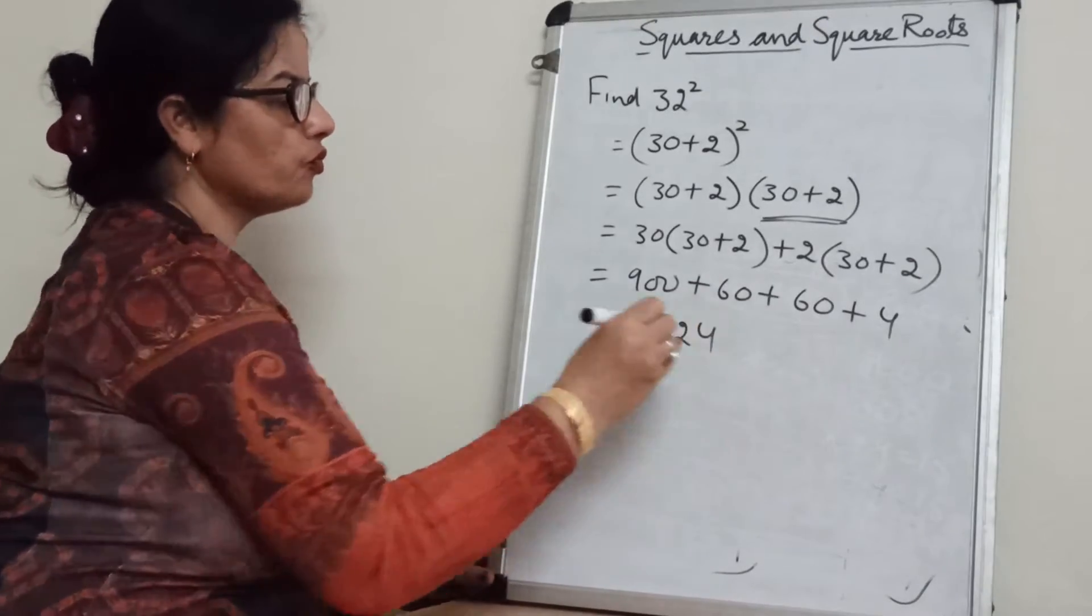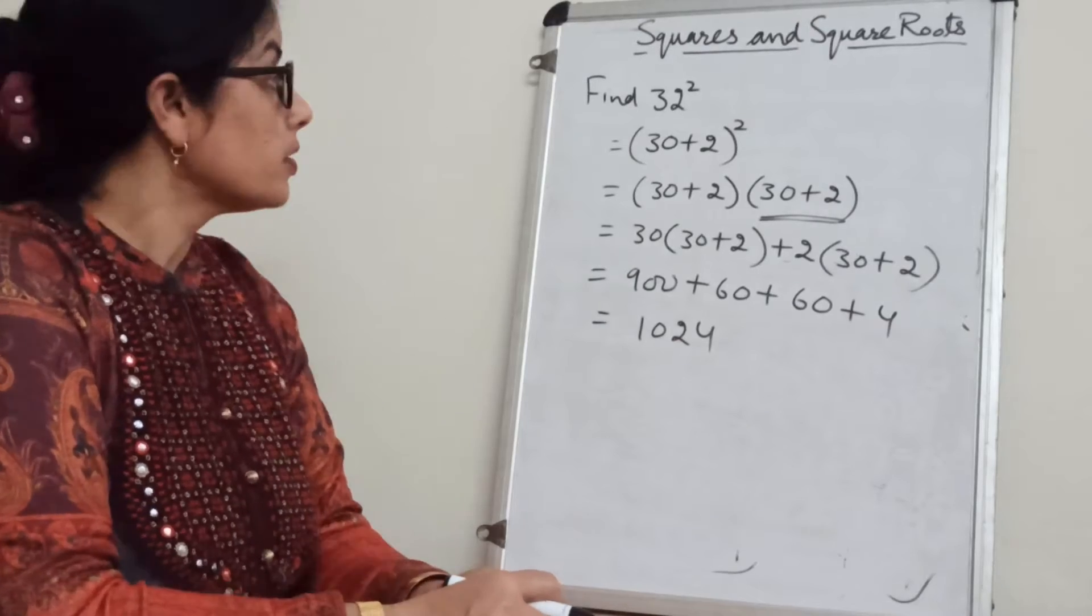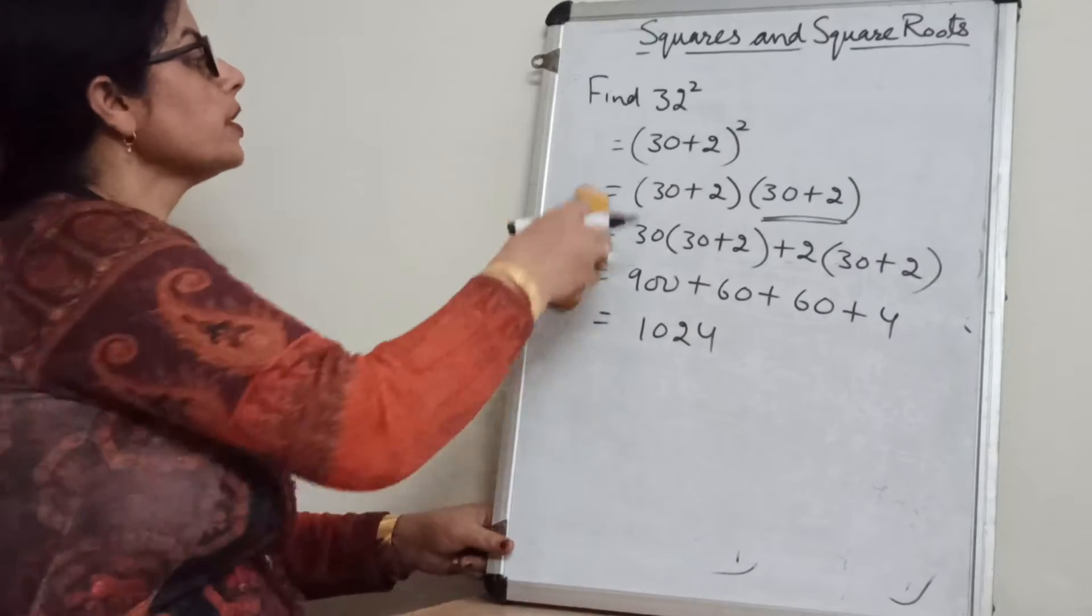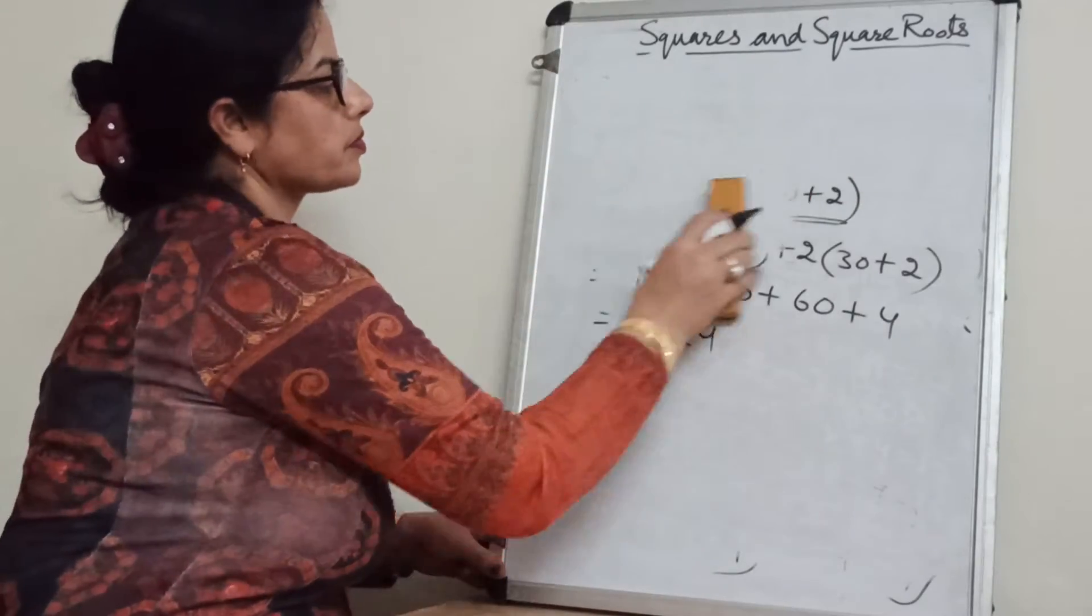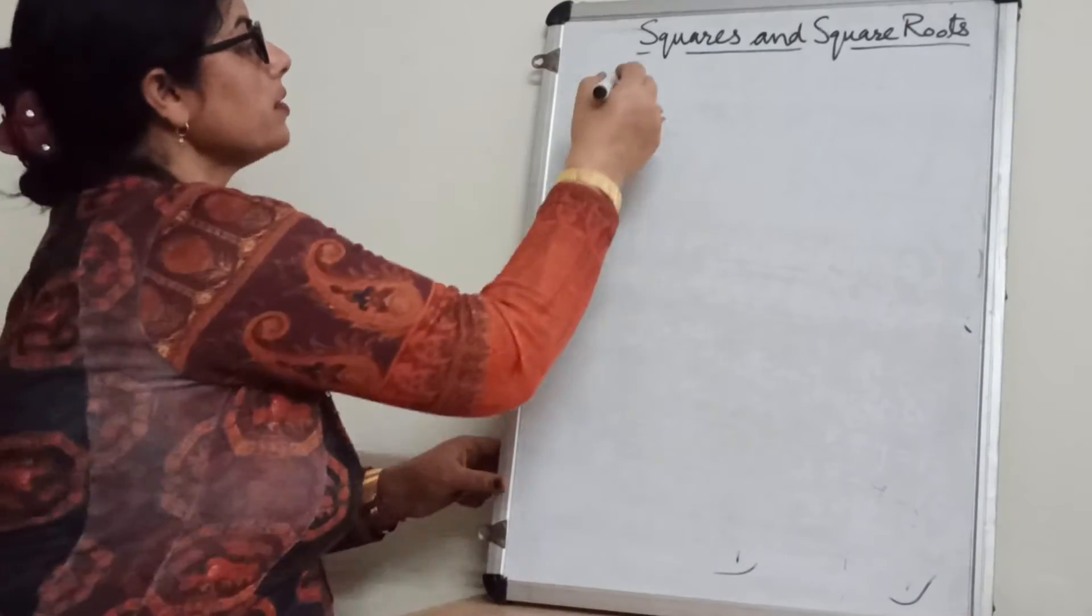You will get 1,024. In this way we have found the square of 32 without actual multiplication. Now see next. I hope you can do sum like this. Let us take one more sum.